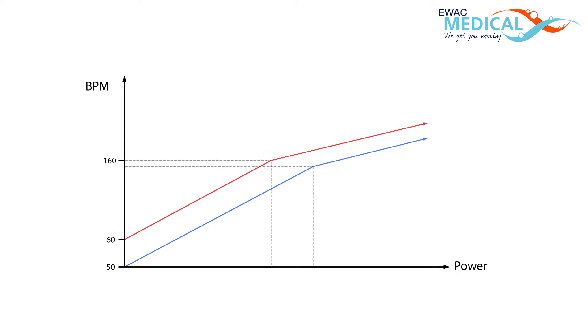When submerged in water however, the basic heart rate is lower at a given power output. This means that in water the human body can produce a higher power output at the same heart rate compared to land based training.